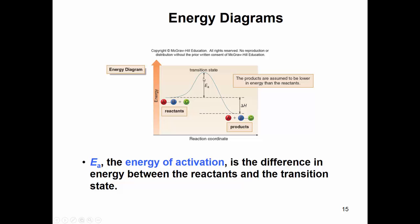Different reactions have different activation energies. If this hill was bigger — with a higher activation energy — it's going to take more energy for those reactant bonds to break and for new bonds to form. This would have a higher energy of activation. If the hill is smaller, this would have a lower energy of activation.